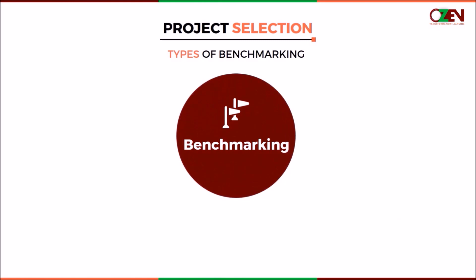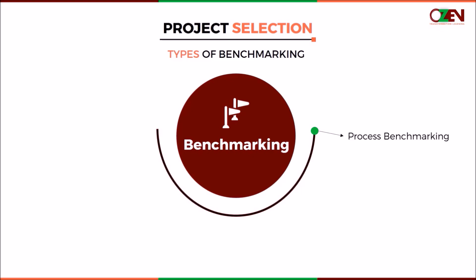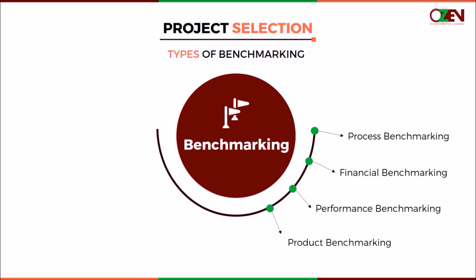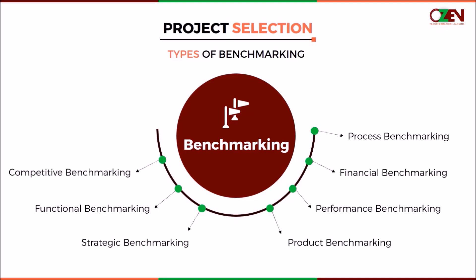The types of benchmarking include: process benchmarking, which is comparing specific processes to a leading company or an industry standard; financial benchmarking, which is a detailed financial analysis and comparison along with information on overall competitiveness and productivity; performance benchmarking, a comparison of products and services with those of competitors; product benchmarking, which involves designing new or upgrading existing products or services; strategic benchmarking, focused on studying strategies and problem-solving approaches in other industries; functional benchmarking, a focused analysis of a single function with the aim of improving it; competitive benchmarking, which is benchmarking organizational strategies, processes, products, services, and procedures against competitors; and collaborative benchmarking, carried out by a group of companies where the information is shared.